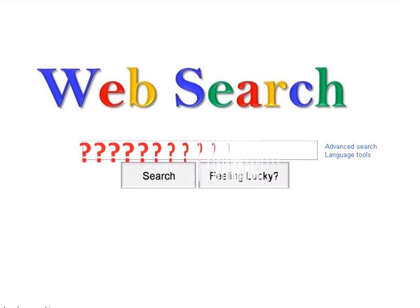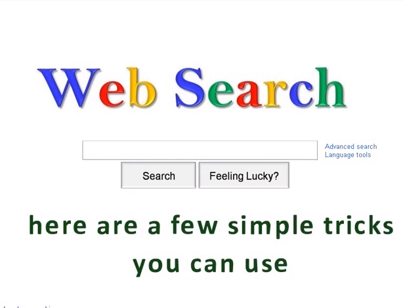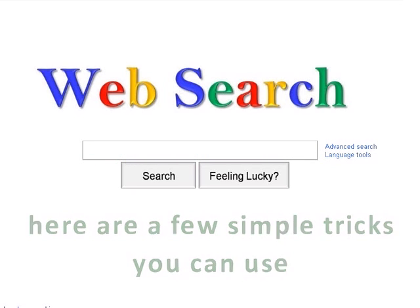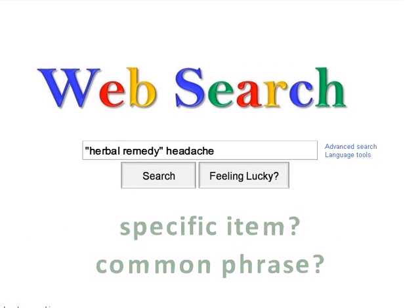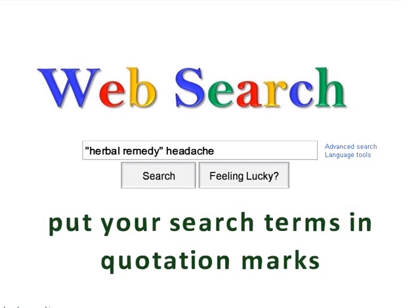So how do you improve your search results? Here are a few simple tricks you can use in a basic web search. First, if you're looking for a specific item or searching for a common phrase, you can put your search terms in quotation marks.